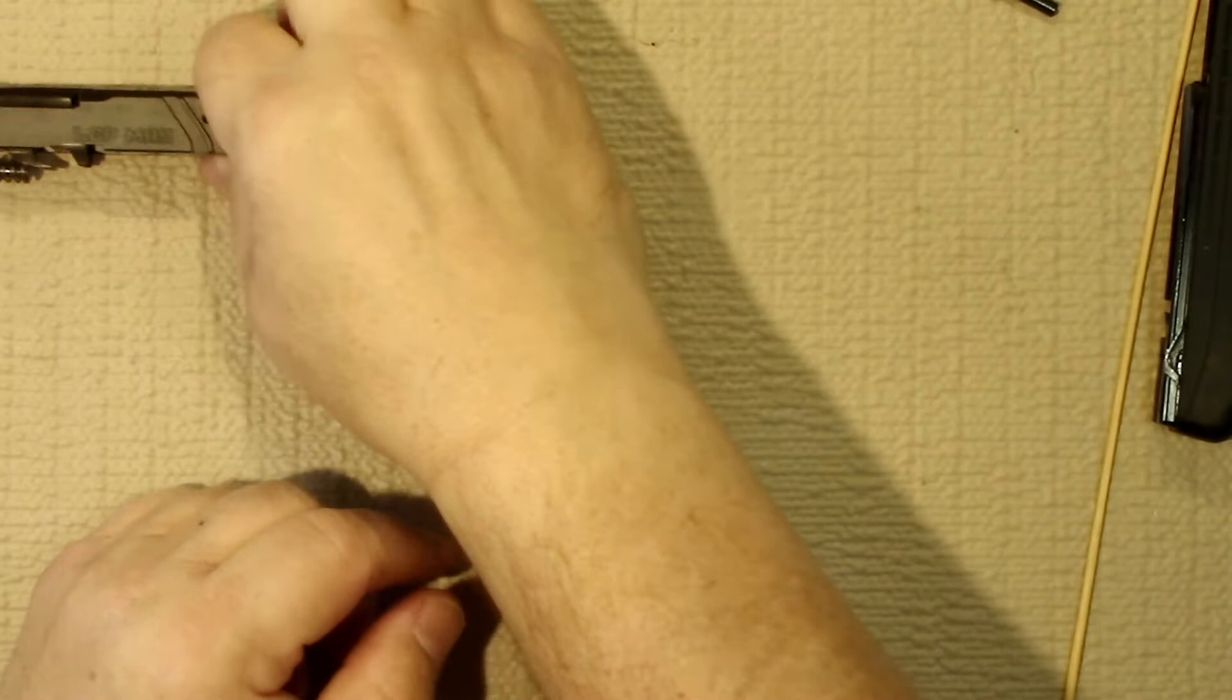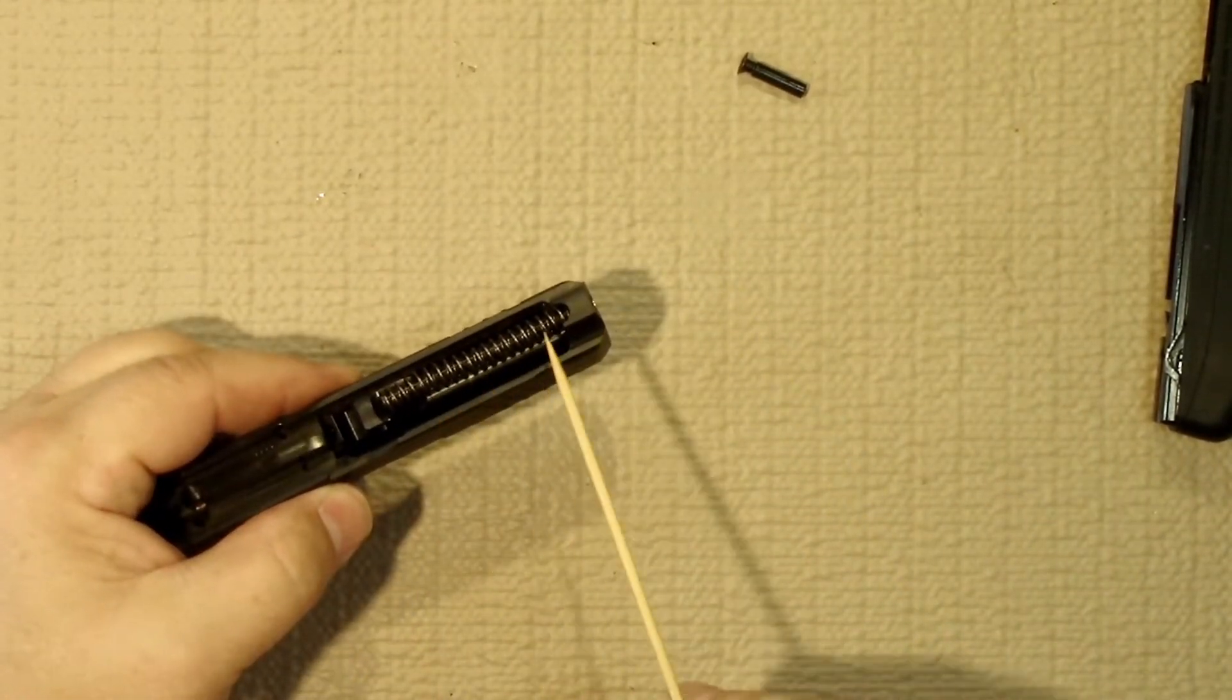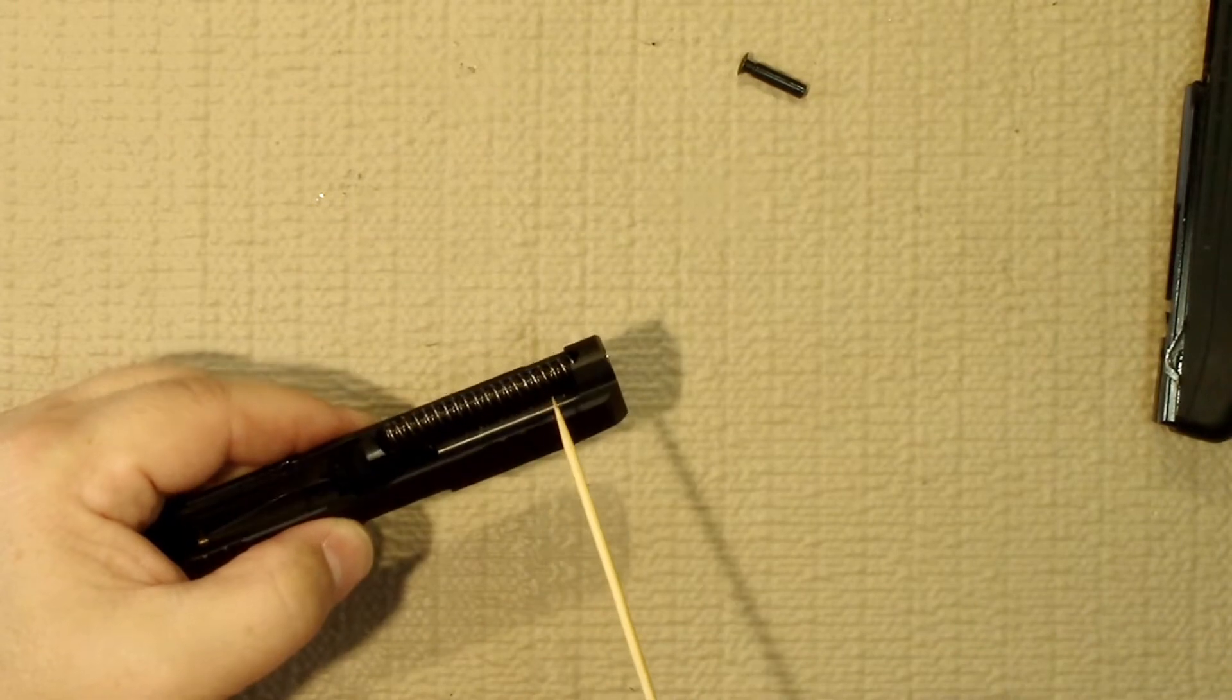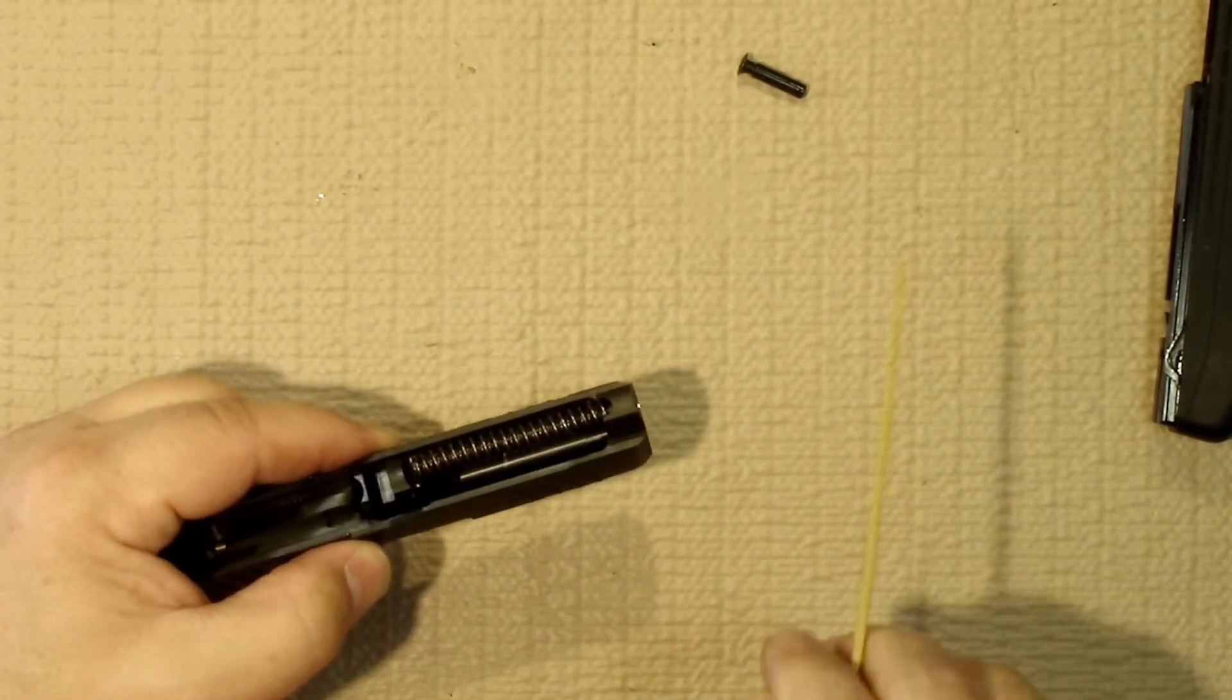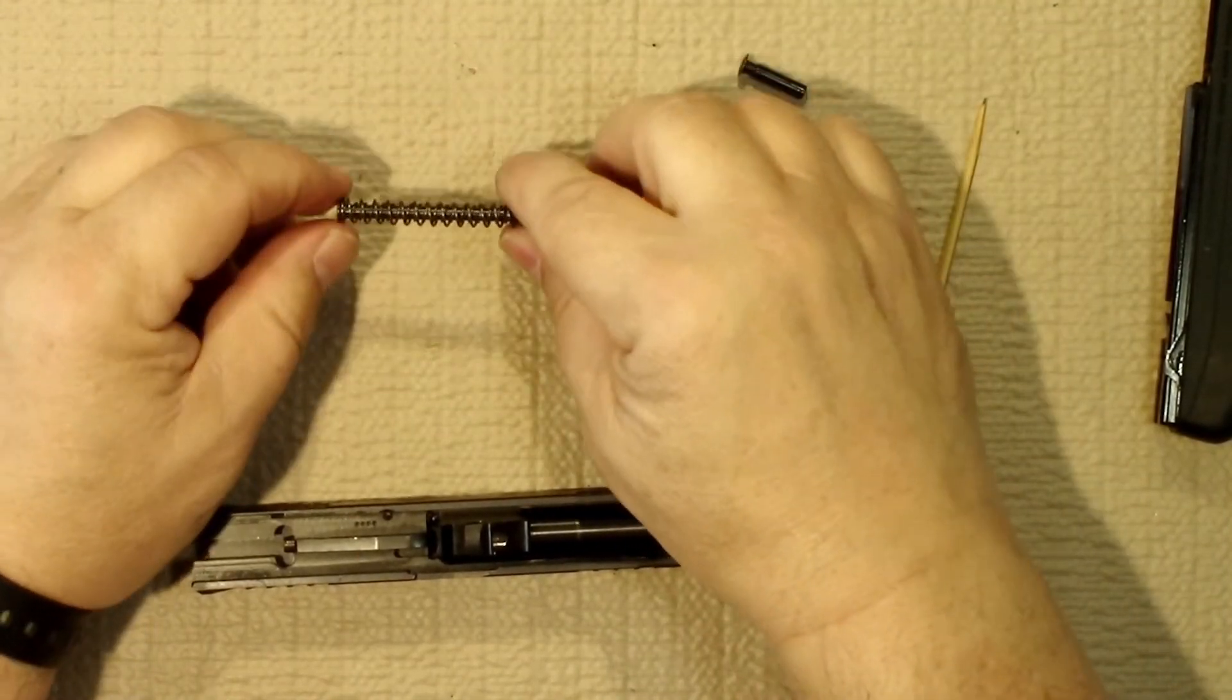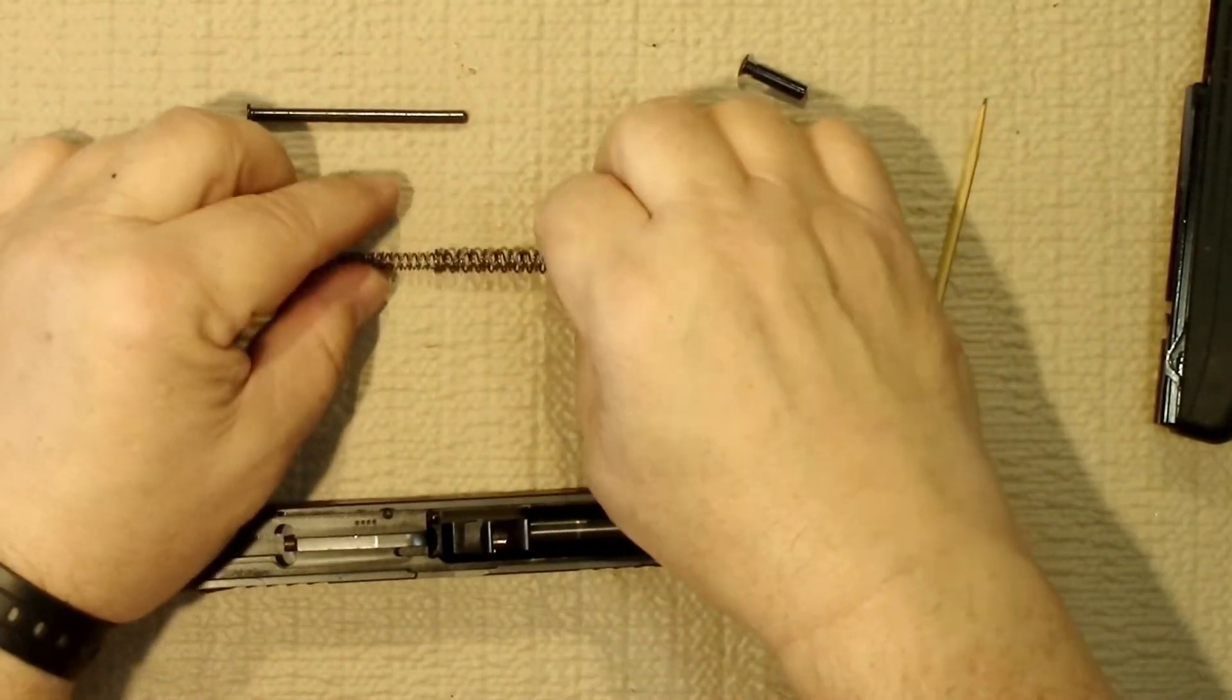We'll take a look at the slide here. We have our recoil spring and guide rod. It's a nested recoil spring - there's actually two springs, one inside the other. It is a non-captive setup. If you lift up on that, just keep a hold of it, and that would come out. Here you have the guide rod and the two springs.